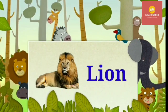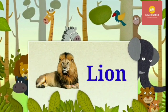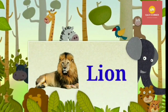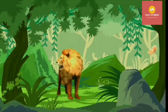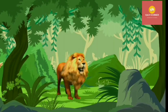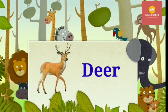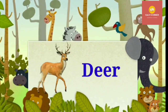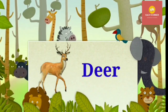First one is lion. It is a big animal which lives in the forest. It is called the king of the jungle. Then comes deer. Deer is an animal that is very attractive in appearance, which lives in the forest.